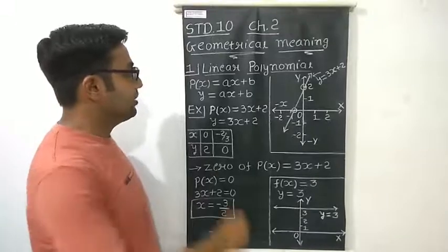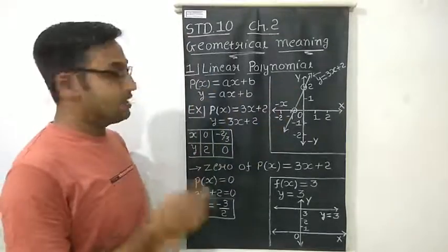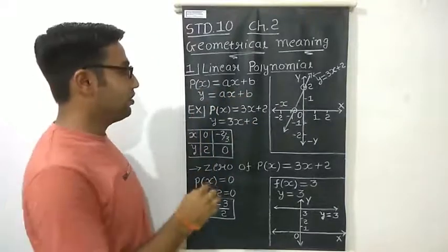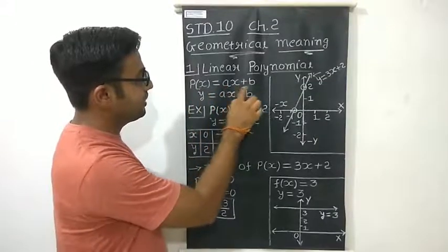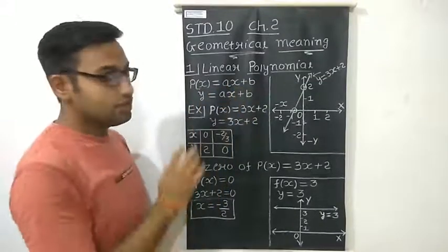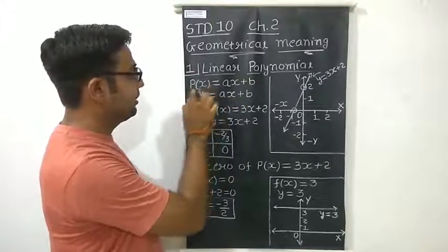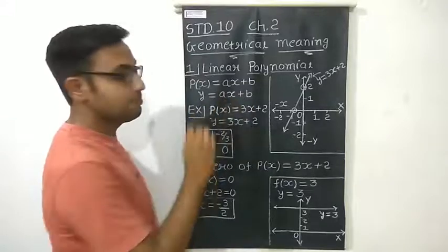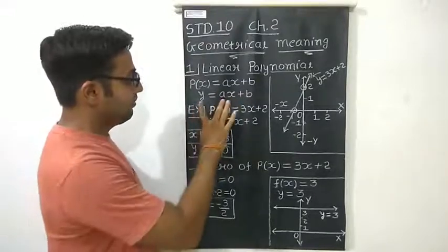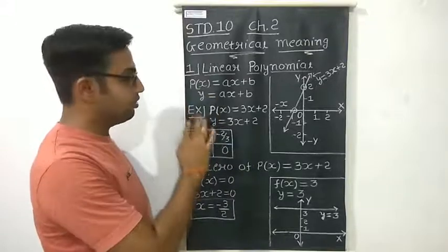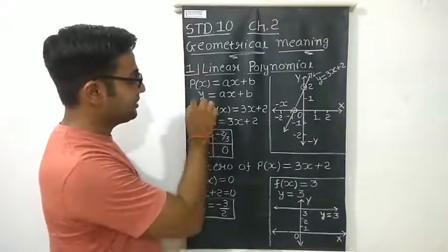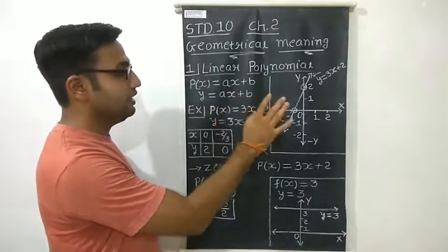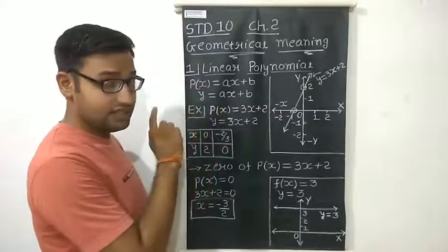The first type is linear polynomials. The standard form is p(x) = ax + b. As we know that by changing the value of x, this value also changes, so we can take it as another variable. Let us take it as y. So y = ax + b. We take y because by doing so, we can represent this expression on a graph.